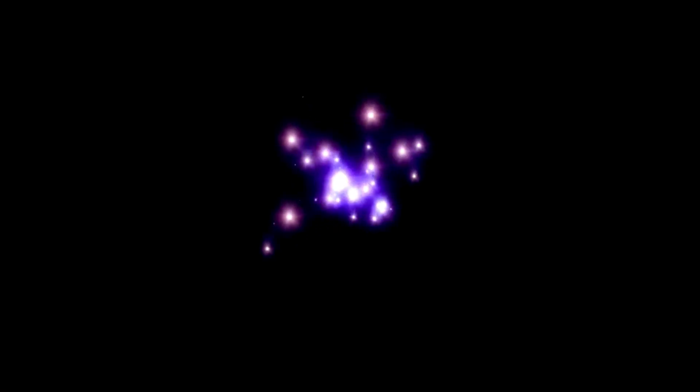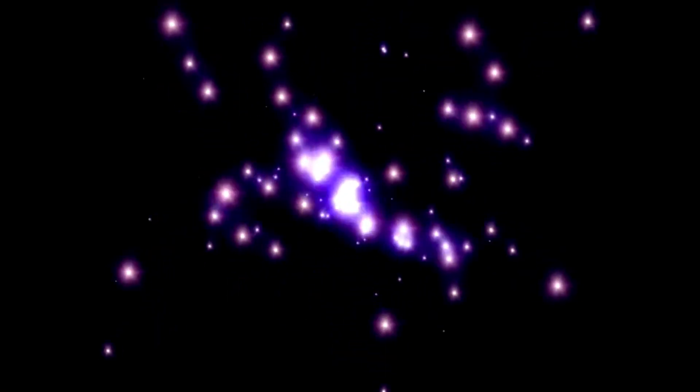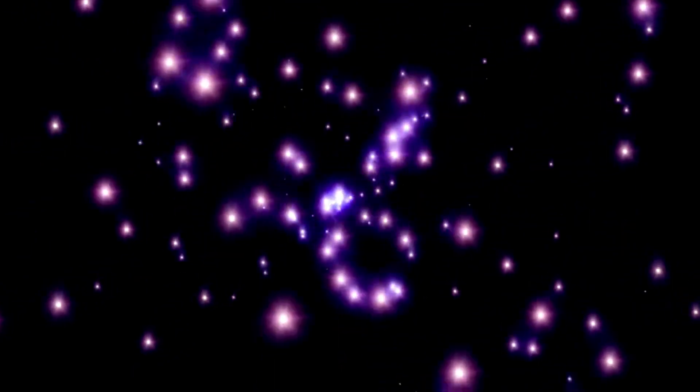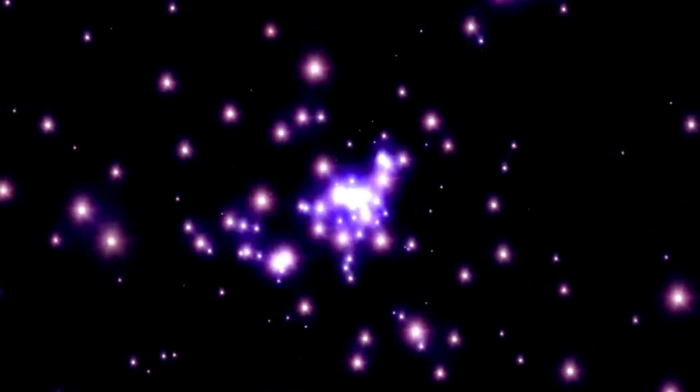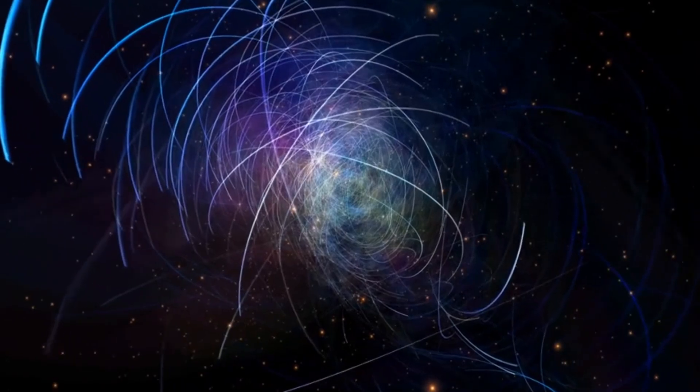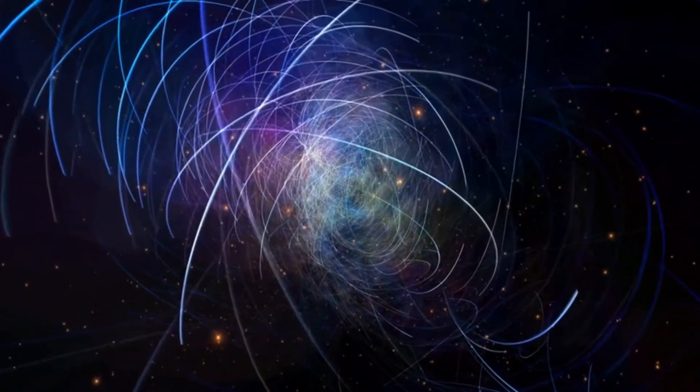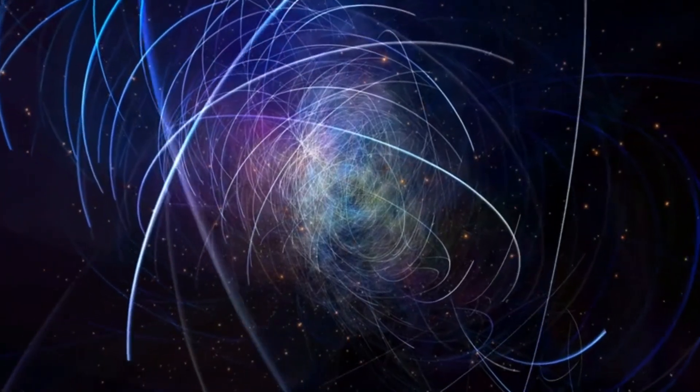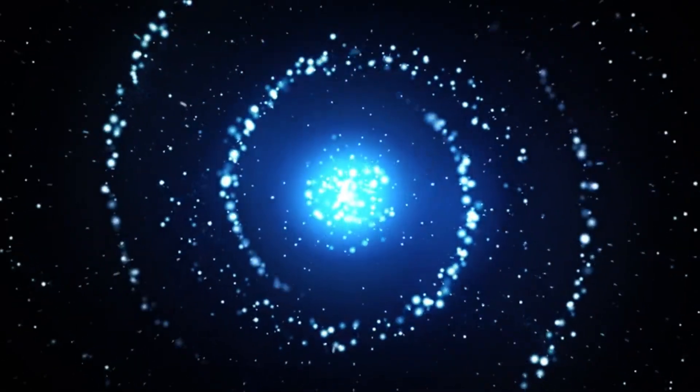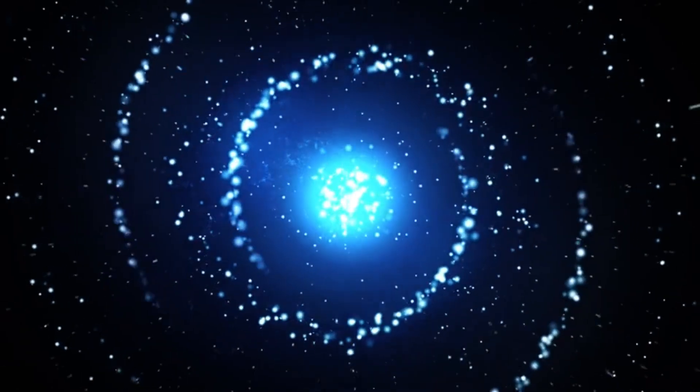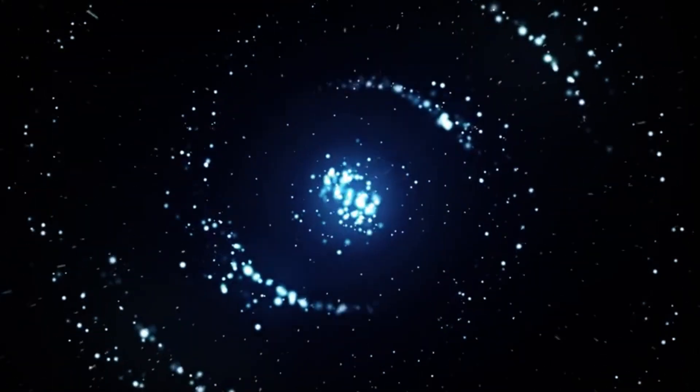In the 1930s, Fritz Zwicky conducted research into galaxy clusters, in particular the Coma galaxy cluster. He postulated that an invisible mass, which he called dark matter, must be present in order to explain certain dynamics that cannot be caused by gravity alone. His theory of dark matter was initially controversial but later became part of standard cosmology.